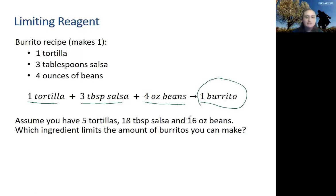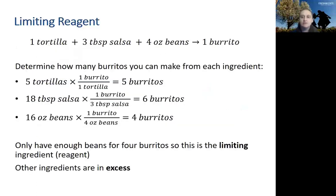Now let's assume we have five tortillas, 18 tablespoons of salsa, and 16 ounces of beans. Which of these ingredients is going to limit the number of burritos we can make? To answer this question, we need to figure out how many burritos we could make from each of the ingredients.